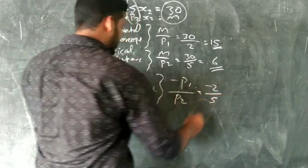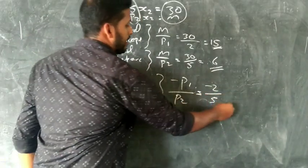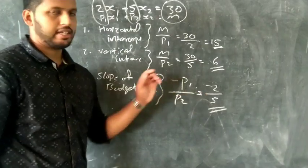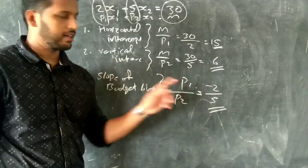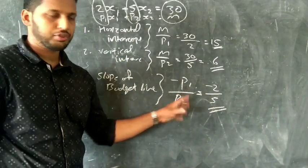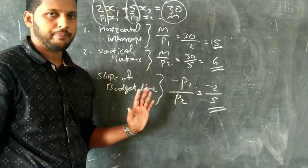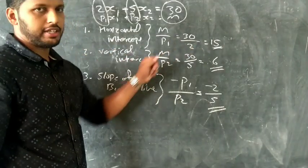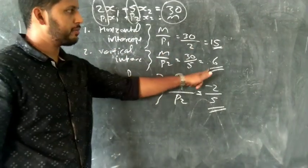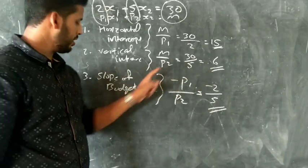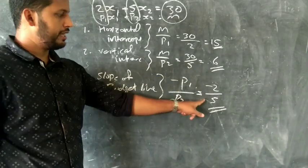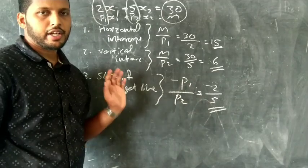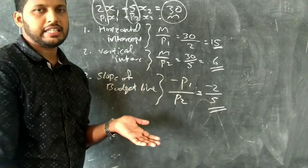The slope is minus 2 by 5. This is the answer. Horizontal intercept, vertical intercept, and slope of budget line minus 2 by 5 — this is the point of the budget line.